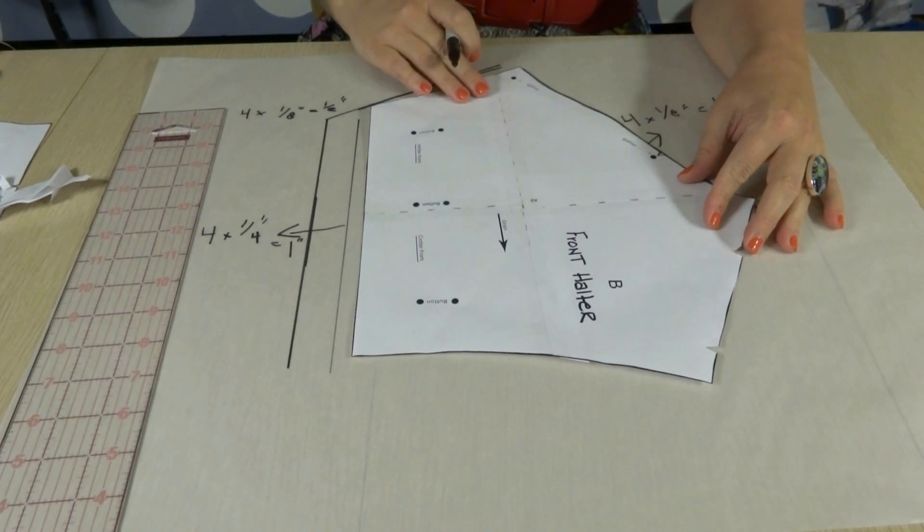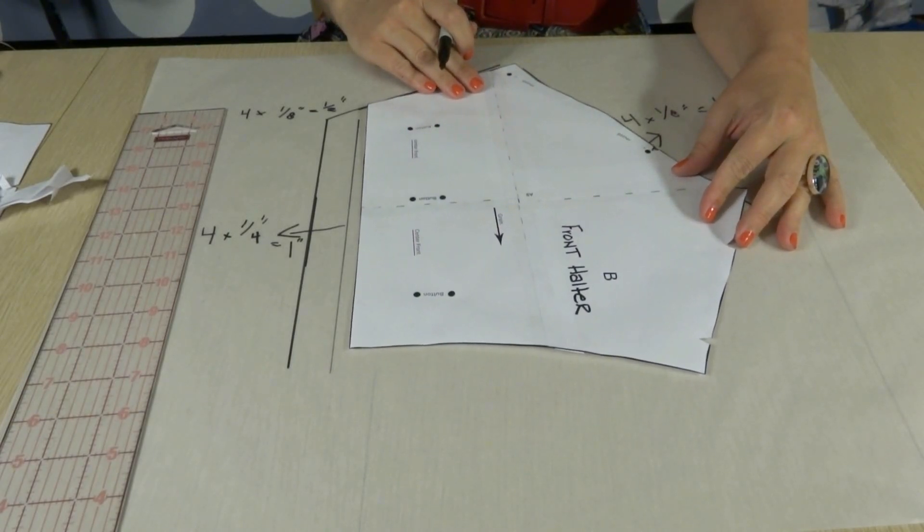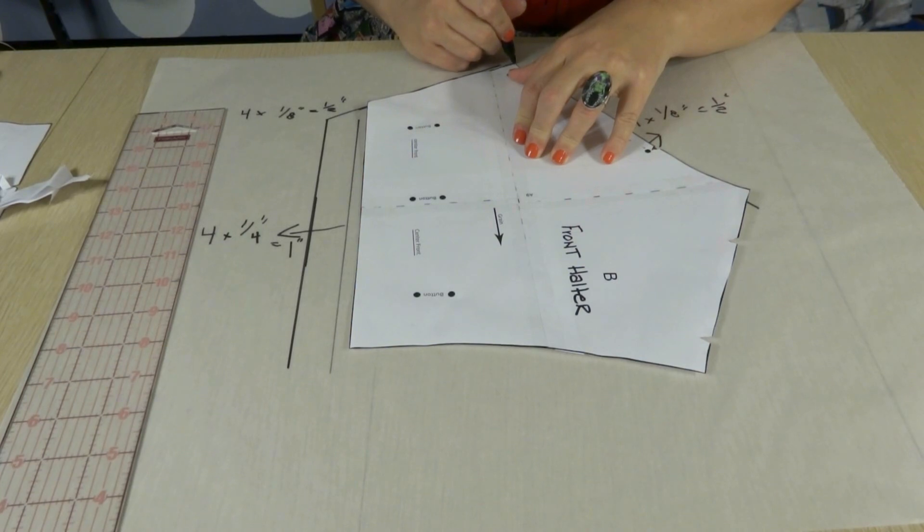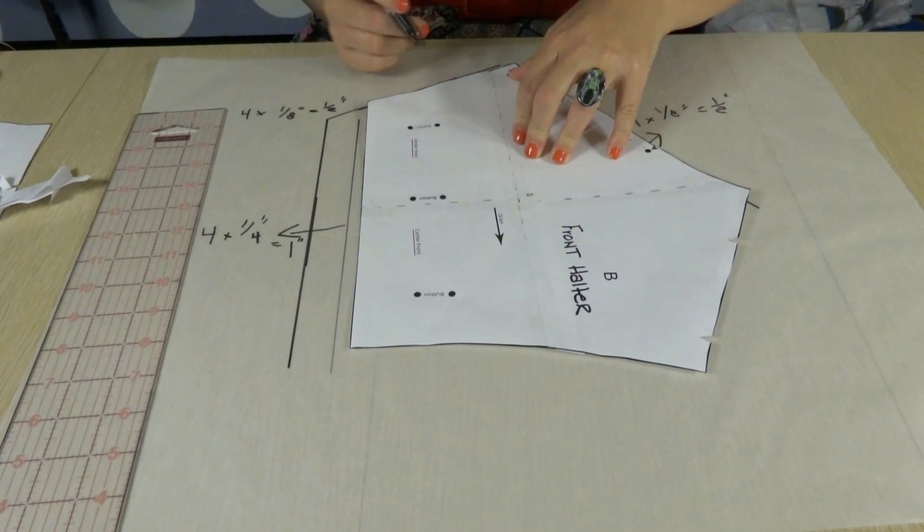And then here we want to make sure we're meeting up. So we're just going to shift it all up and then trace around the pattern once again.